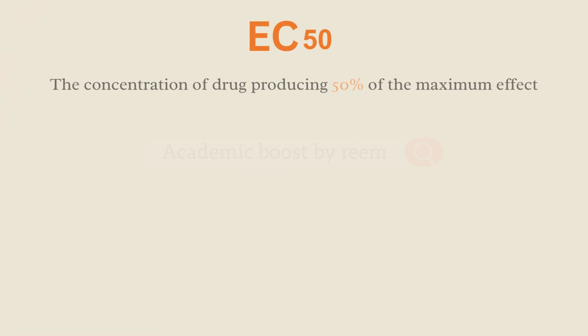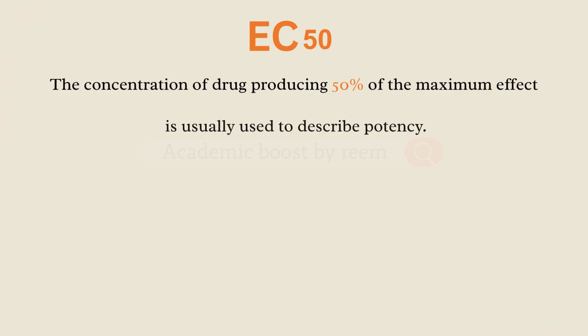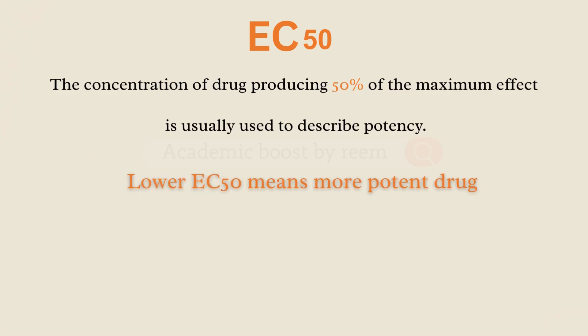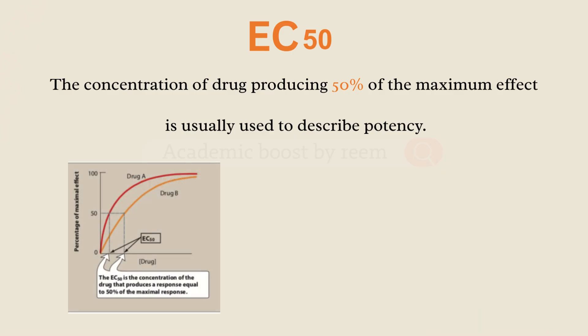EC50 is usually used to describe potency. The rule is: a lower EC50 means the drug is more potent, because it needs less drug to reach half of its maximum effect.